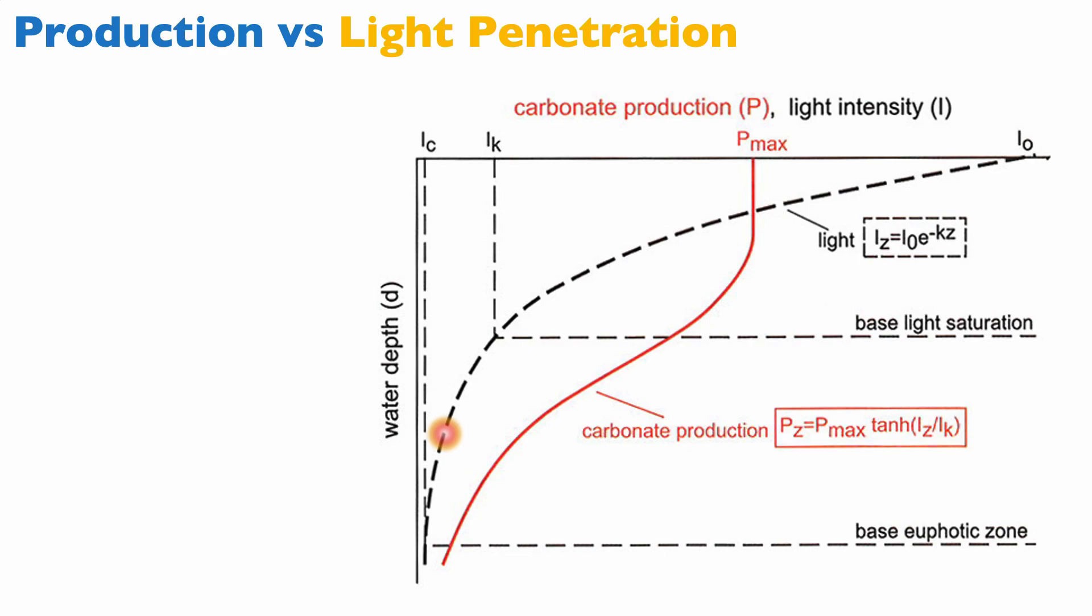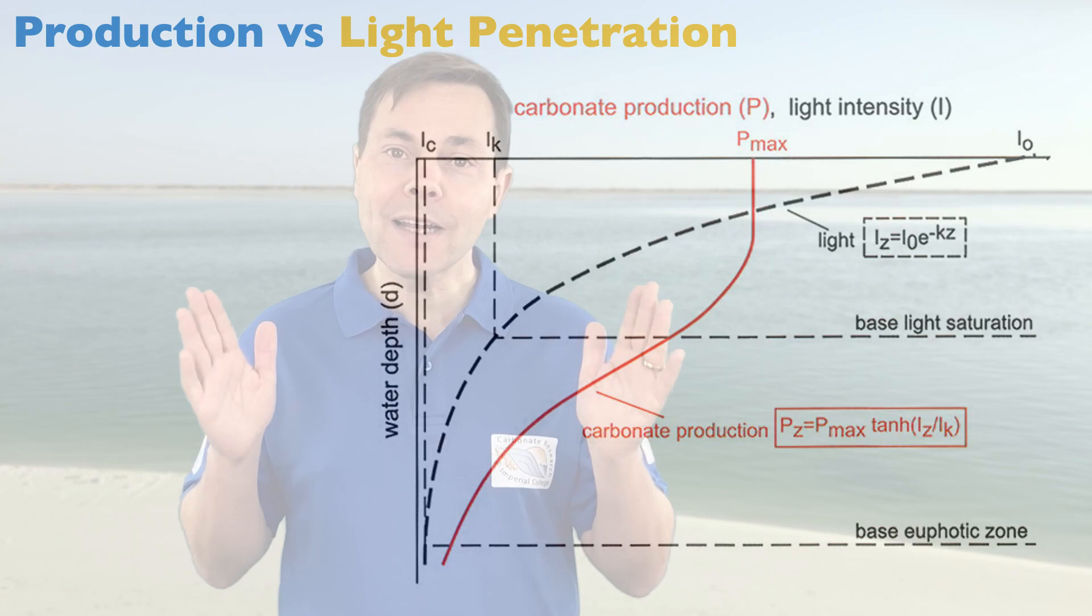And then at that point, when most of the light has been absorbed, you still have a slow decrease in light absorption until you reach what is known as the base of the euphotic zone. Below the euphotic zone, there is no light.